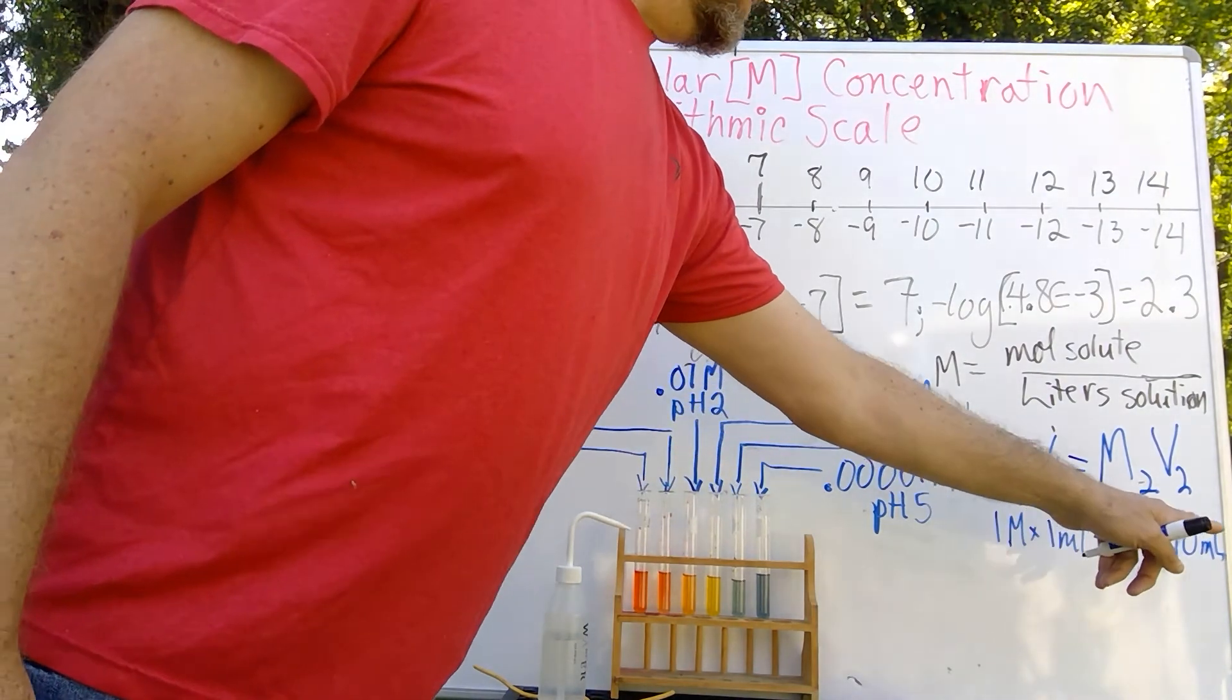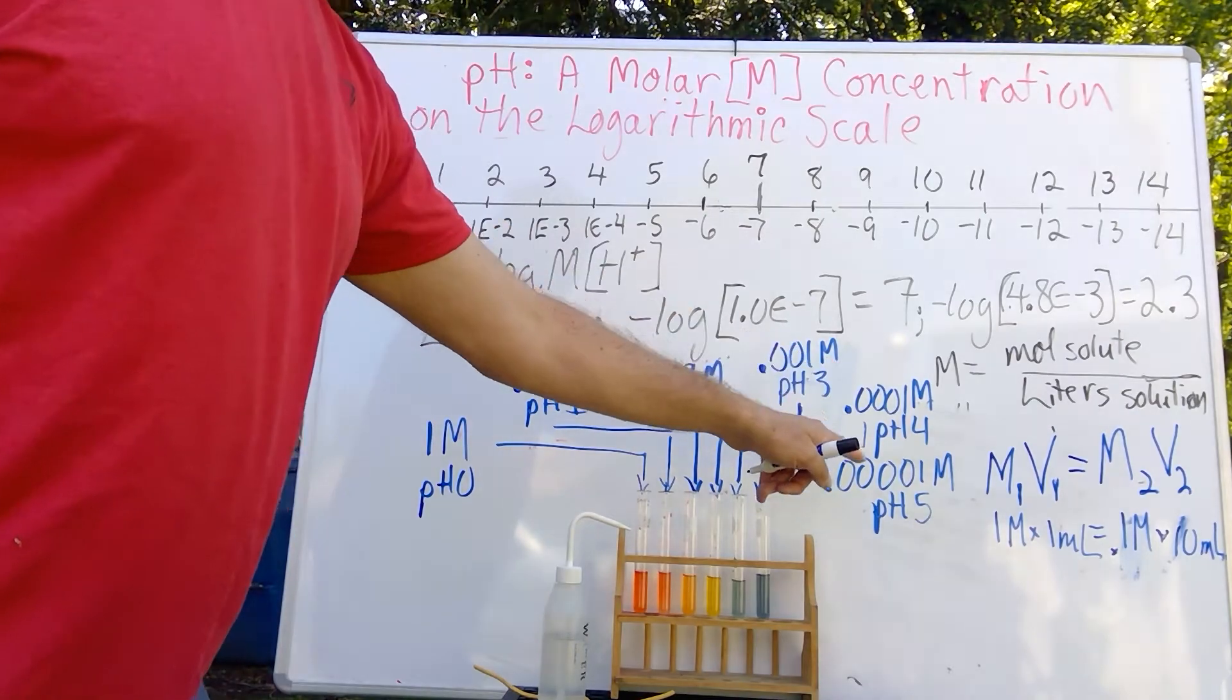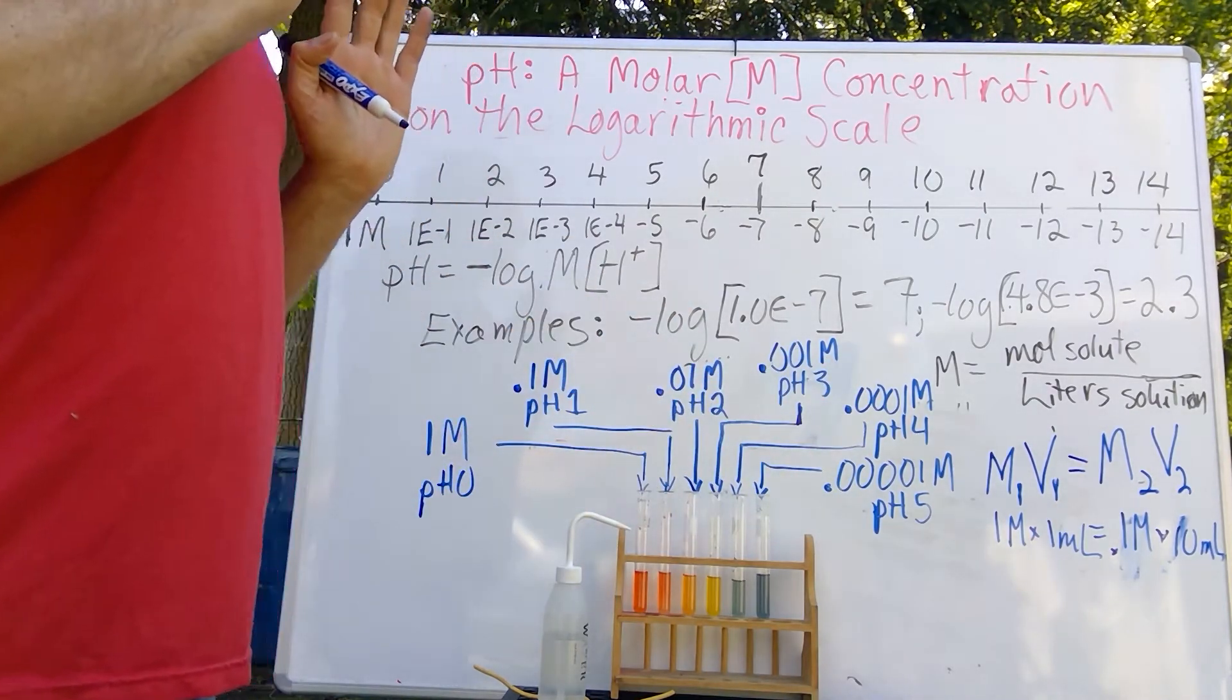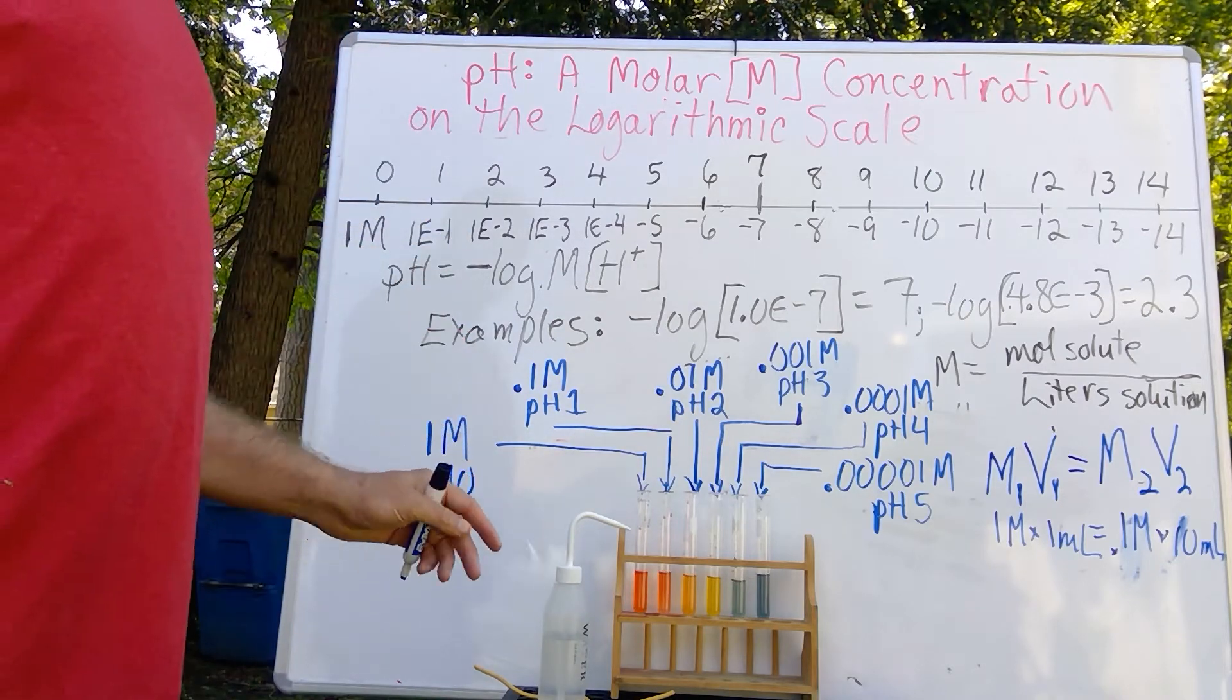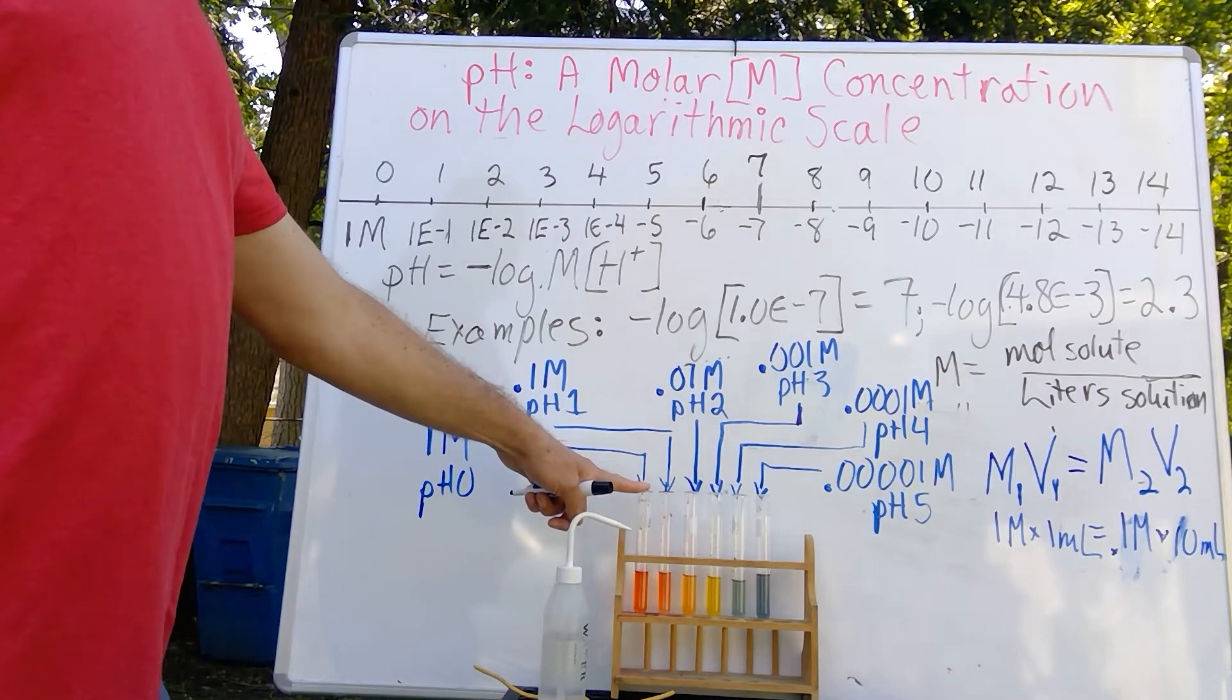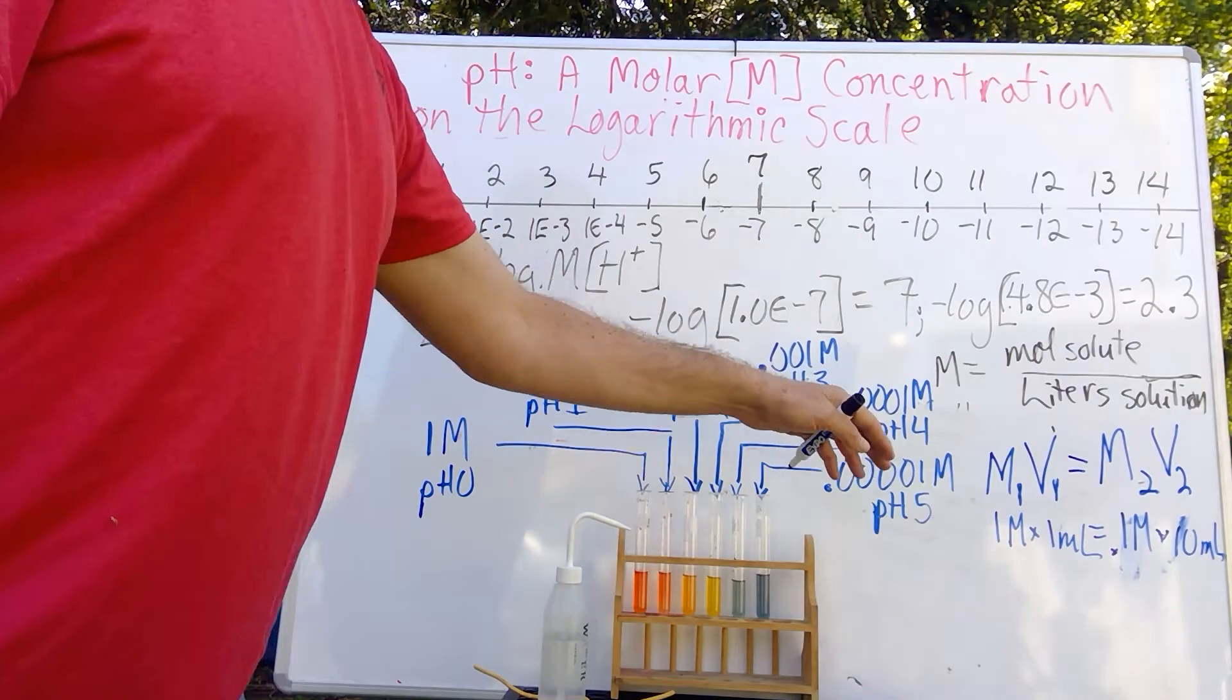And then it was creating a successively weaker molar concentration each time. And in a lot of lab chemistry, you're taking a concentrated stock solution and using this equation to make successive dilutions.